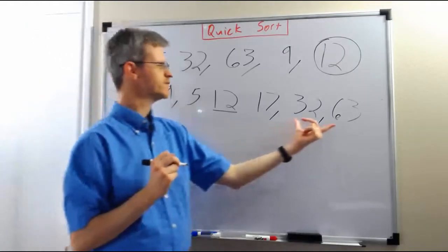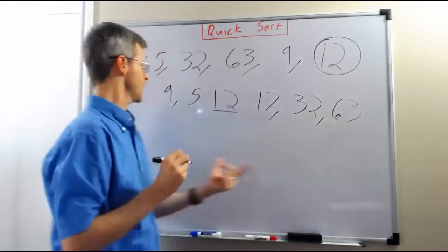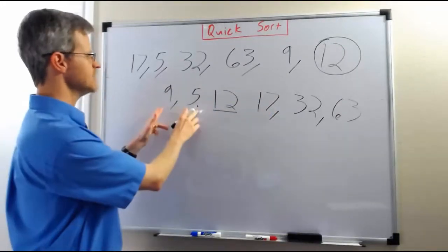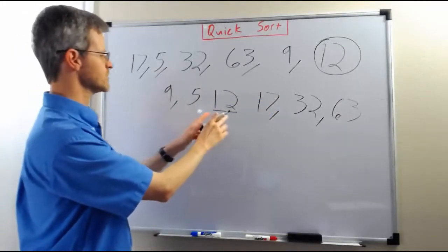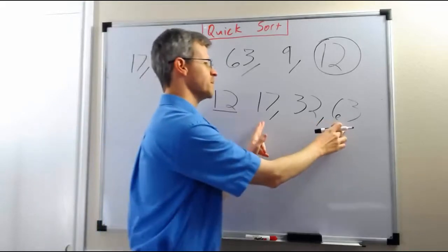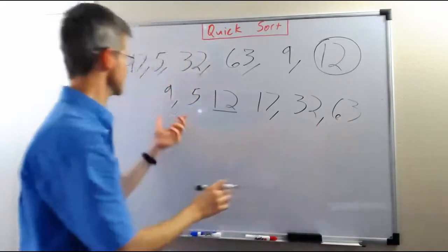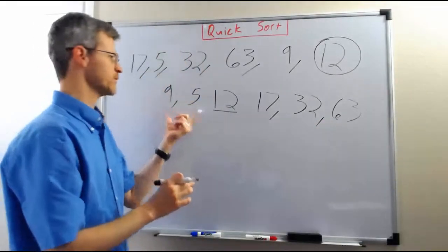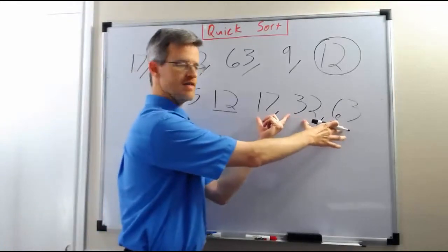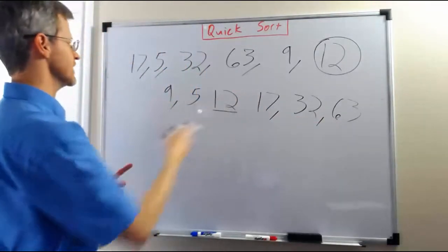This list of numbers is all greater than the pivot. So we know that when the list is fully sorted, these numbers will be first, this number will come after them, and these numbers will be last. The question is what will be the order of these numbers, and what will be the order of these numbers within their respective lists?